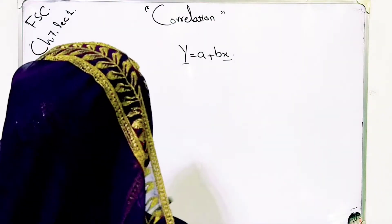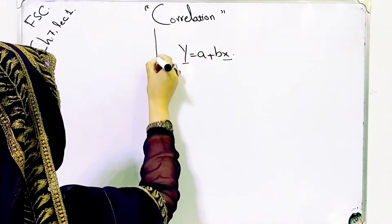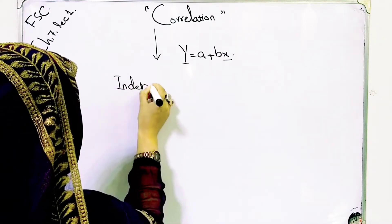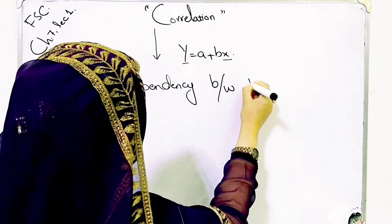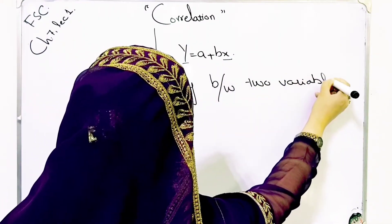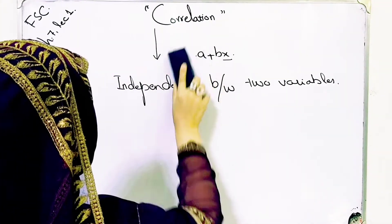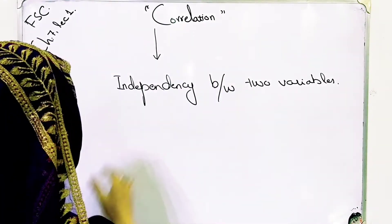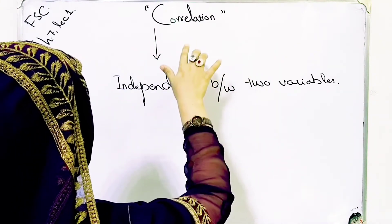Now, correlation. We said that the dependency between two variables is called regression. Now, correlation is about the interdependency between two variables. If we have two variables and we measure their interdependency, that is called a correlation. The difference is only between regression and correlation.